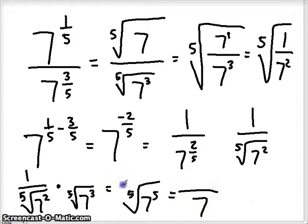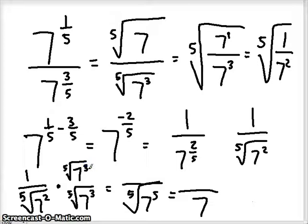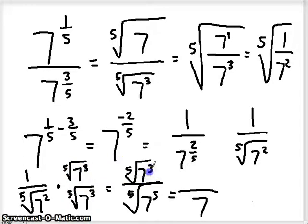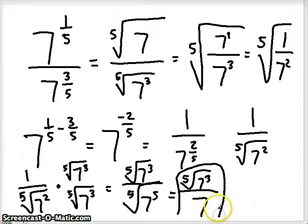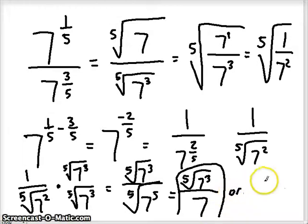But we can never do something to the bottom without doing it to the top — we've got to keep our fractions balanced. So I also multiply the top by the same thing, and on the top I get the 5th root of 7 cubed. That gives us the 5th root of 7 cubed over 7, and this is basically our final answer. We could also write it in exponent form as 7 to the 3/5ths power over 7 — that's also acceptable.